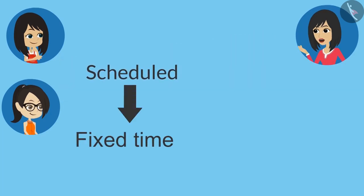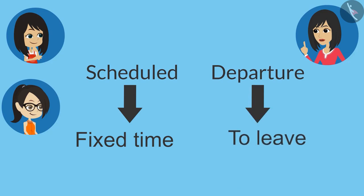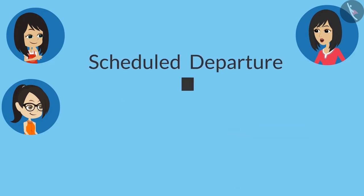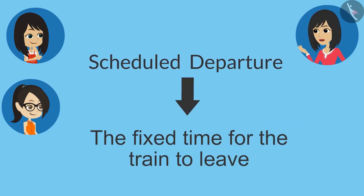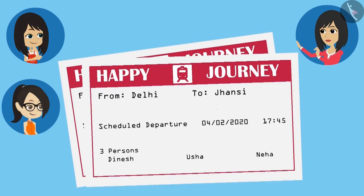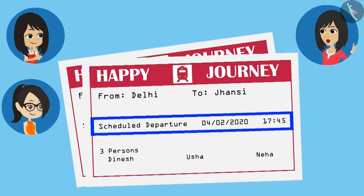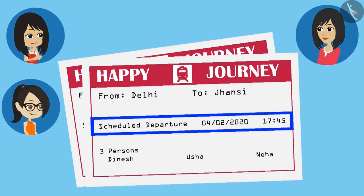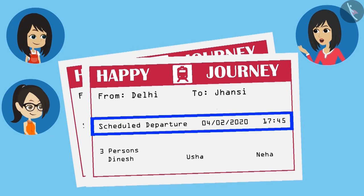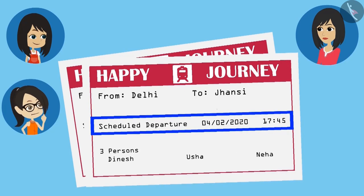Scheduled means fixed time, and departure means to leave. So, scheduled departure means the time fixed for the train to leave — that is, the train will leave from the platform at this time. So we have to board the train before this time. This means this information is showing the time? Yes, it is showing both the starting date of the journey and the time of the train.